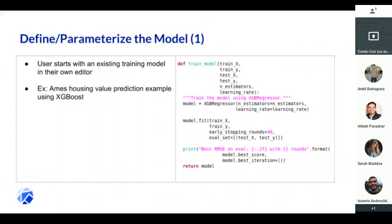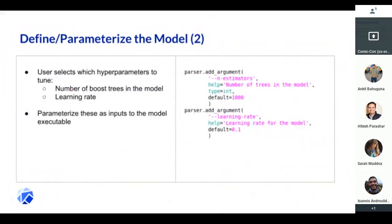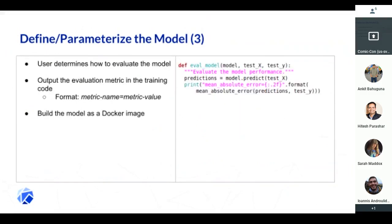I'm going to pace through this quickly because we don't have a ton of time. In CADIAP today, you start with your training model — you can use your own editor. Here we have an example of a housing value prediction using XGBoost. You define what hyperparameters you want to tune — in this case, the number of boosting trees and the learning rate — and you parameterize those as inputs to your model. Then you determine what metrics to use to evaluate your model; in this case, we're using mean absolute error. Then you just build that model as a Docker image.